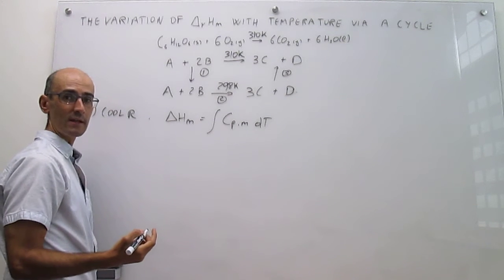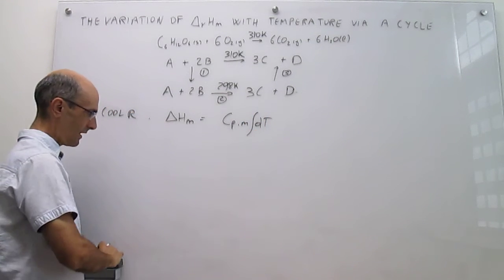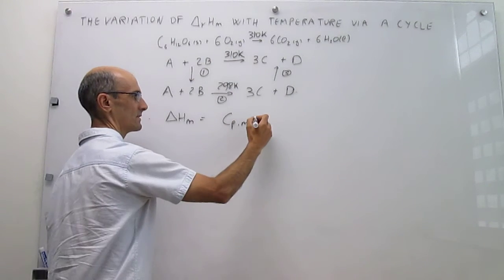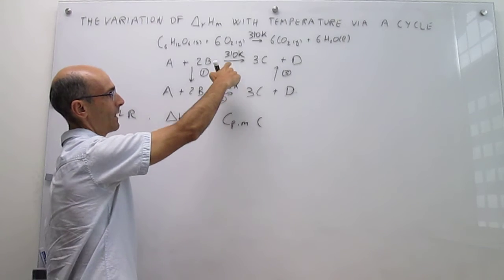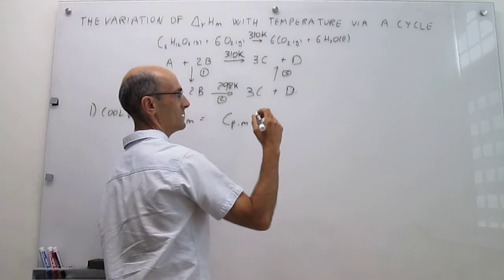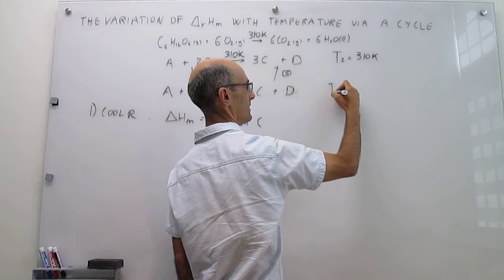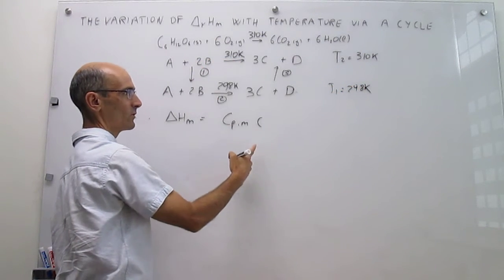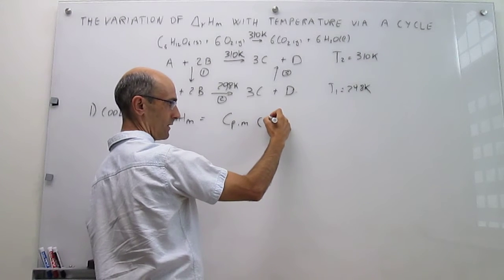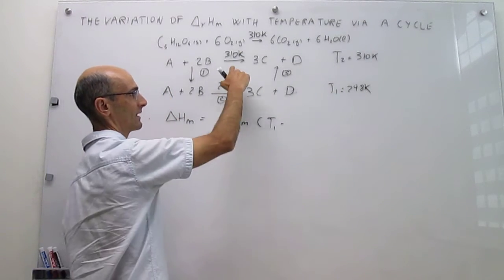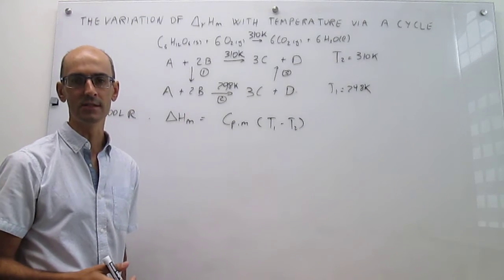If we assume that the heat capacities do not depend on temperature, then you can factor them out of the integral, and that integral is simply ΔT. ΔT will be 298 Kelvin (the final temperature) minus 310 Kelvin (the initial temperature). For notational convenience, we define T2 = 310 Kelvin and T1 = 298 Kelvin, so the first step has final temperature T1 and initial temperature T2. This notation will be convenient later.